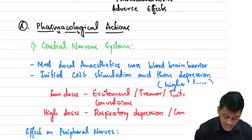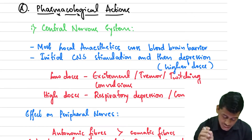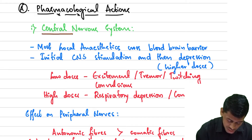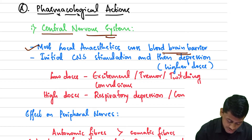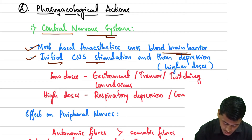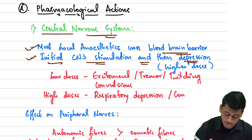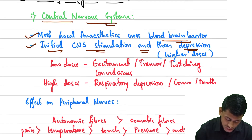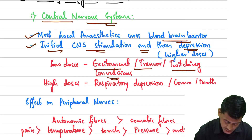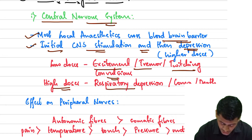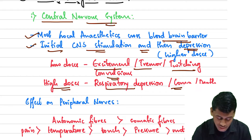Moving on to the pharmacological actions. Firstly, we'll discuss the actions on the central nervous system. Most local anesthetics cross the blood-brain barrier and cause initial CNS stimulation followed by depression. In low doses, they cause excitement, tremor, twitching, and convulsions. In high doses, they cause respiratory depression, coma, and death. So we have a dose-dependent pharmacological action.